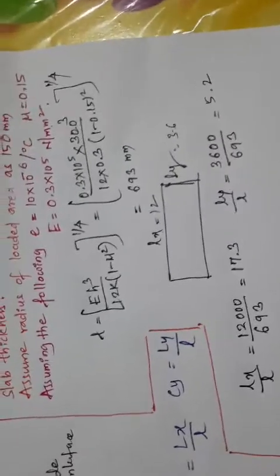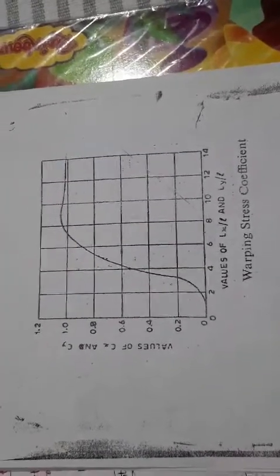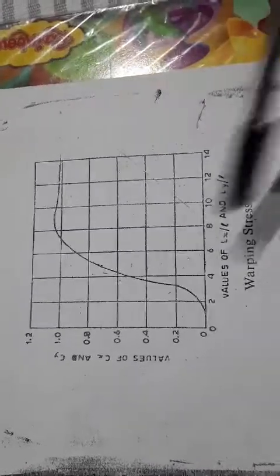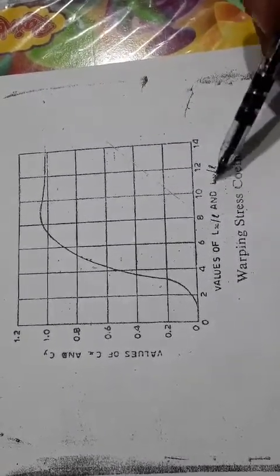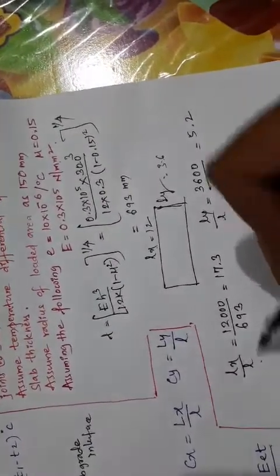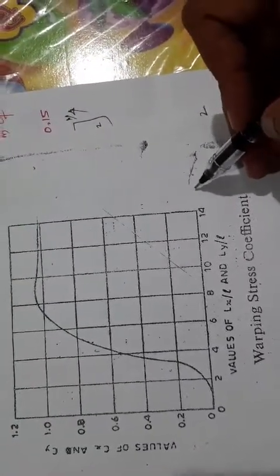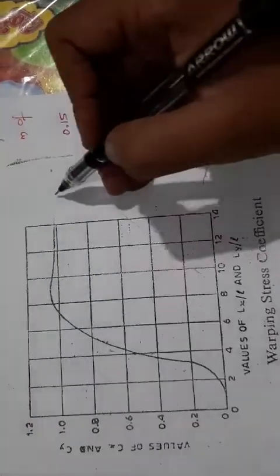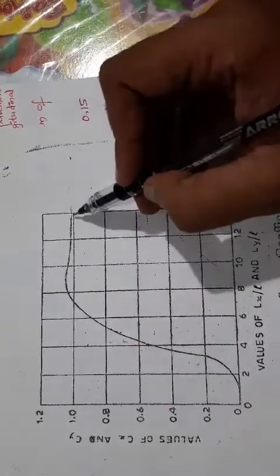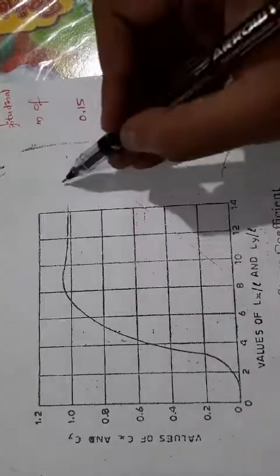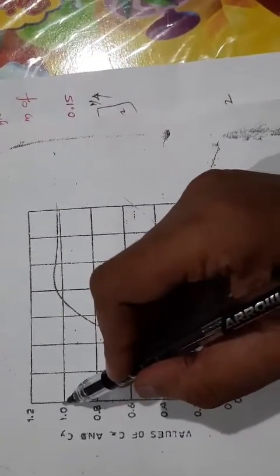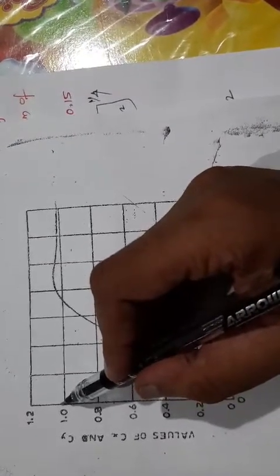Now I'm going to see in the Bradbury's chart. The warping stress coefficient will be given by this chart. You should have this with you. In this chart, on the x-axis we can find values of Lx by L or Ly by L, and on the y-axis you can find Cx or Cy. Lx by L is 17.3. If 17 is not available here, if I extend this further, it will be 16, then 17. If I take the straight line, it's going to be straight or more flatten. If somewhere it cuts here, then if I take it here, it will be around 1 or 1.02 or 1.03. That will be Cx.